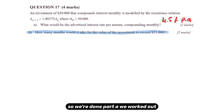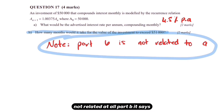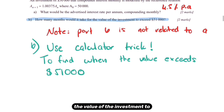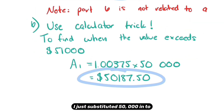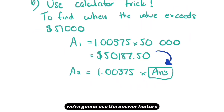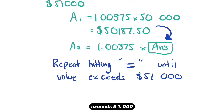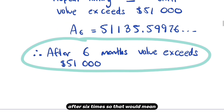We've done part A — 4.5% per annum. Note that parts A and B of this question are not related. For part B: how many months would it take for the value of the investment to exceed $51,000? We use the calculator trick. Find A1 by substituting 50,000 in for A_0. Then use the answer feature on the calculator to repeat this and find A2, A3, and so on. Continuing until the value first exceeds $51,000 — it does so after six iterations. Therefore after six months the value first exceeds $51,000.